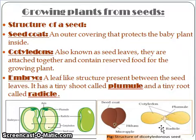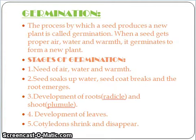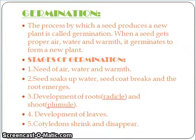Let us move on to germination. It is the process by which a seed produces a new plant under favourable conditions. These favourable conditions are air, water, and temperature. The following are the stages of germination: the seed absorbs water from the soil; as a result, the seed coat becomes soft and breaks; the radicle comes out and goes deep into the soil; then the plumule emerges and grows towards the sunlight. The seedling uses the food stored in the cotyledons for its growth. As soon as new leaves start emerging and start preparing their own food by the process of photosynthesis,